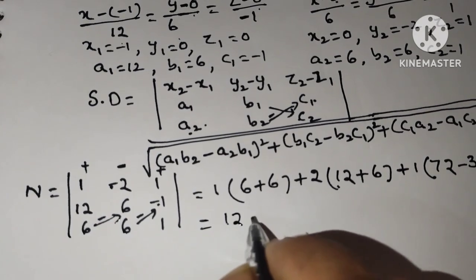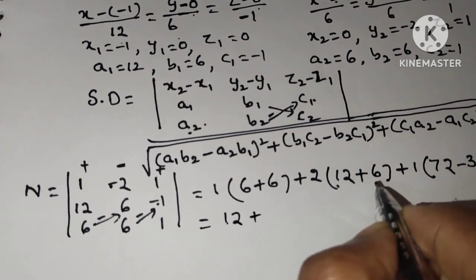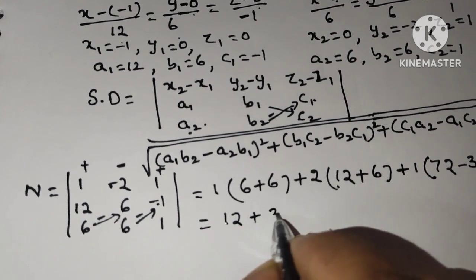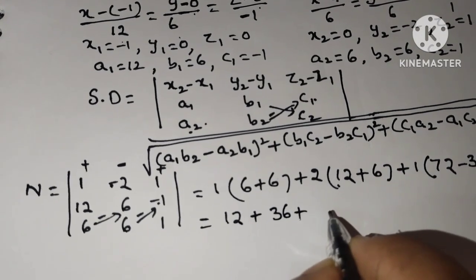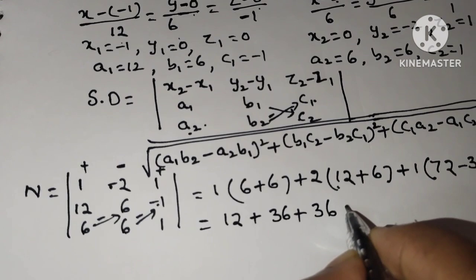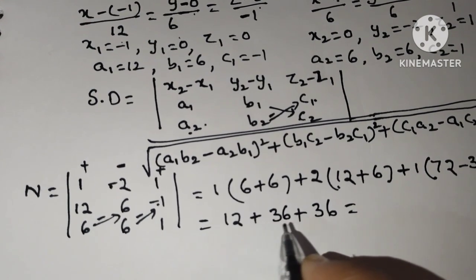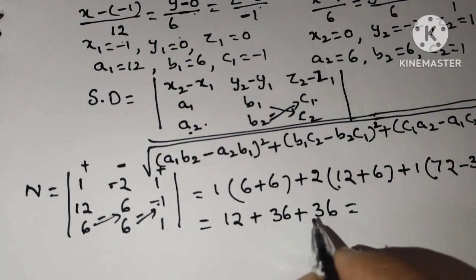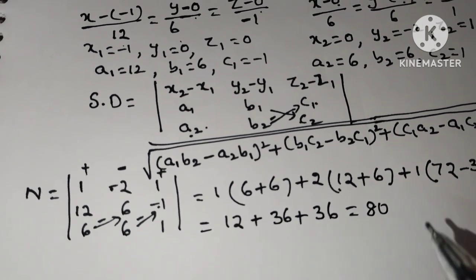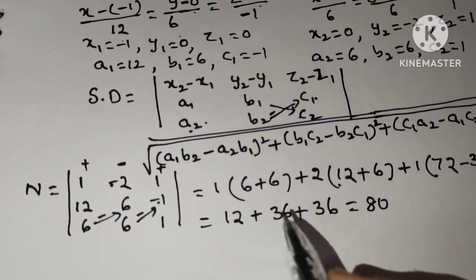So calculate this. 6 plus 6, 12. 12 plus 6, 18. 18 square is 36. Plus here, 72 minus 36 is 36. Now 36, 36, 72. 72 plus 12 is 80. So numerator is 80.